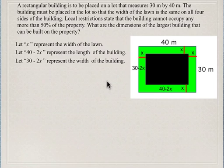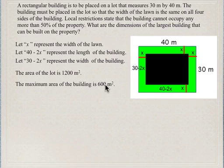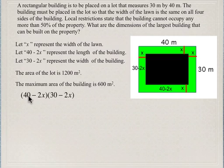Now we can figure out the area of the total lot. The lot is 40 meters by 30 meters, so the total area is 40 times 30, which is 1200 square meters. The maximum area the building can occupy is 600 square meters, because the restriction states the building cannot exceed 50% of the property. So the maximum area of the building is 600 square meters.